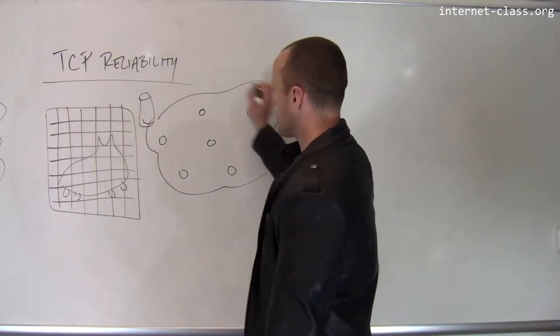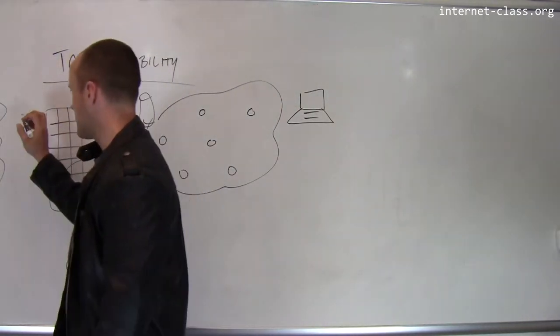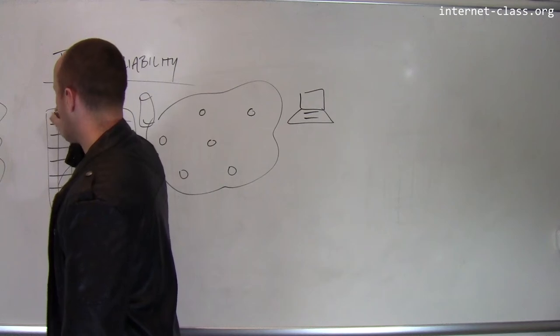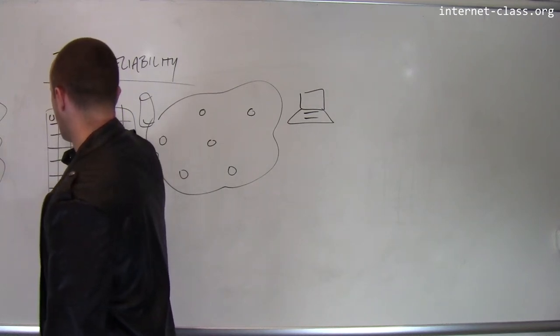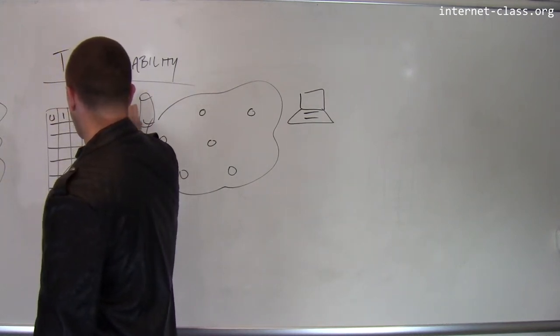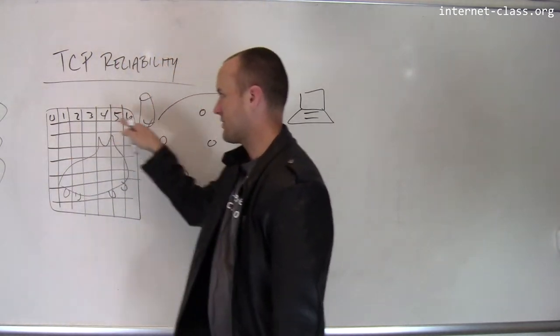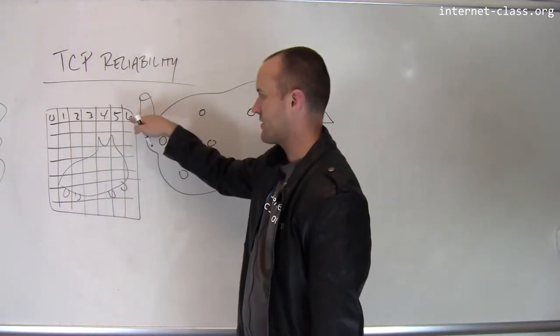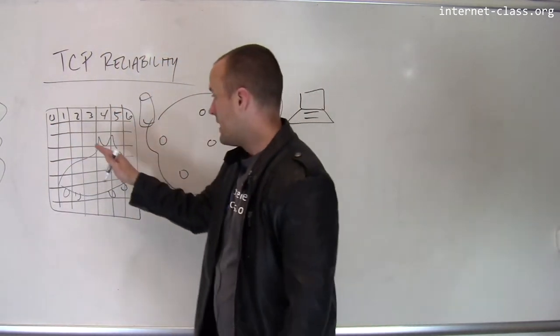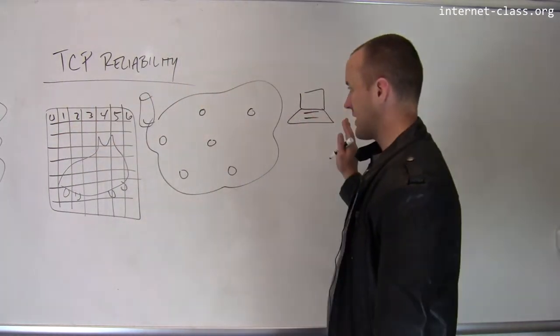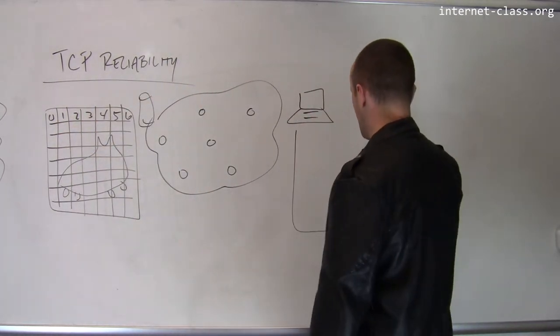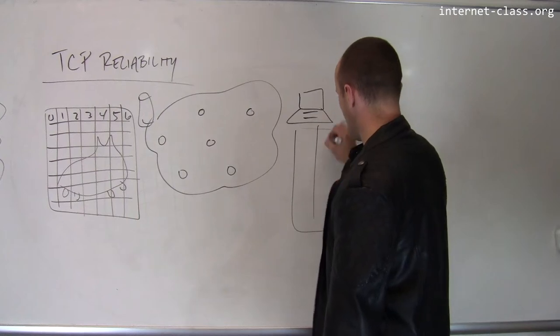So when the client requests this information from the server, the server's TCP program is going to break up this content into these chunks, and it's going to assign each one of them a sequence number. So imagine I've numbered these seven chunks from zero to six. Now I'm going to send these chunks out over the internet, and let's imagine that some of them arrive, and some of them don't.